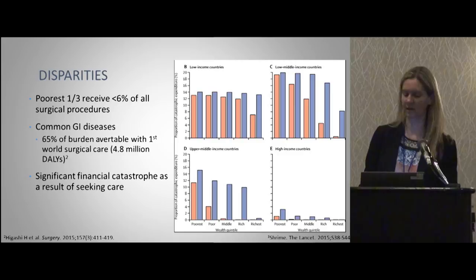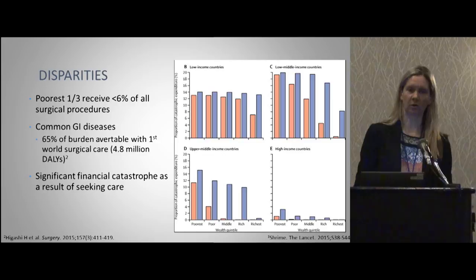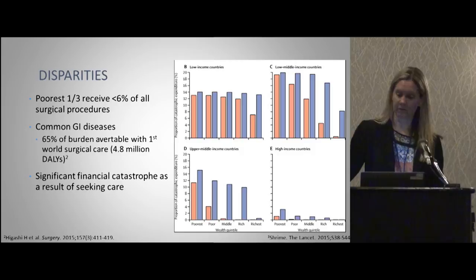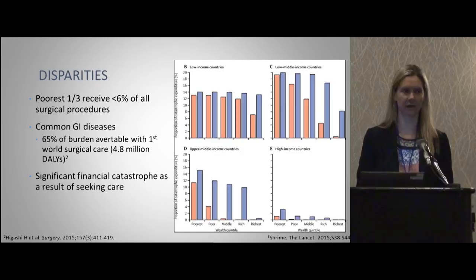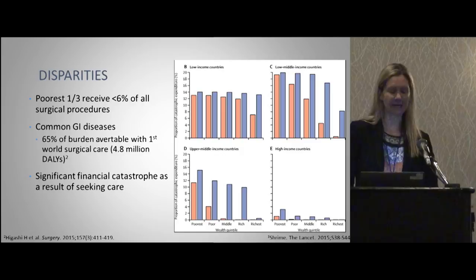The financial impact is much greater on people in low- and middle-income settings. In lower middle-income countries, up to 20% of people will face financial catastrophe if they seek surgical care, whereas in the U.S. that's less than 1–2%, and only among the poorest strata. So it's harder for people to get care when they need it, they have trouble seeking it, and they face financial catastrophe if they do. It's a huge problem.